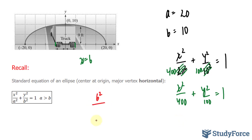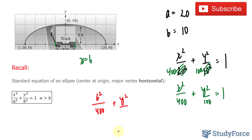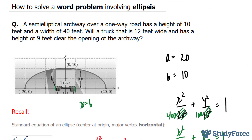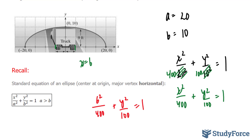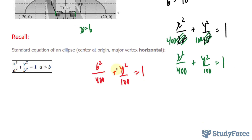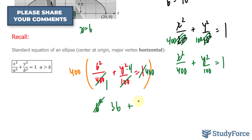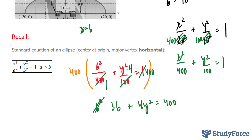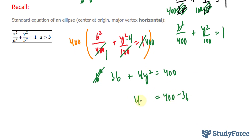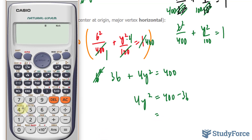So we have 6 squared over 400 plus y squared over 100 equals 1. You could also substitute 9 into y and solve for x to check. The common denominator among all three terms is 400, so I'll multiply everything by 400. This gives us 36 plus 4y squared equals 400. Bringing 36 over: 400 minus 36 divided by 4, which gives us 91. So y squared equals 91.